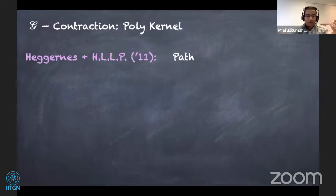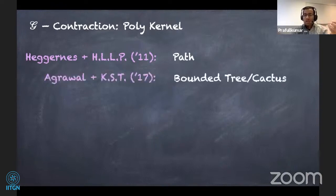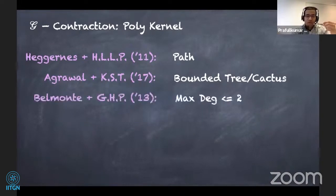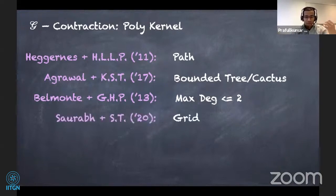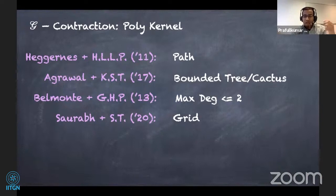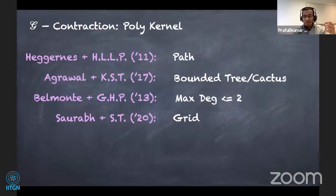This is what we have when it comes to polynomial kernels for graph contraction problems — this list is almost exhaustive to the best of my knowledge. Starting with path contraction from 2011, then bounded tree and cactus admitting polynomial kernels; since 2013, Heggernes et al. proved maximum-degree-at-most-two graph contraction admits a polynomial kernel. This year we were able to prove that if the target graph class is a set of grids, the problem admits a polynomial kernel.